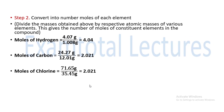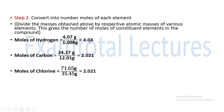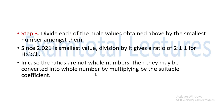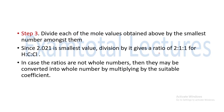Now we don't know what the compound is — that's what we will find out. Step 3: divide each of the moles values obtained by the smallest number among them. The smallest here is 2.021. So we divide all by 2.021: 4.04 divided by 2.021, 2.021 divided by 2.021, and 2.021 divided by 2.021. The ratio we get is 2:1:1 for hydrogen, carbon, and chlorine.